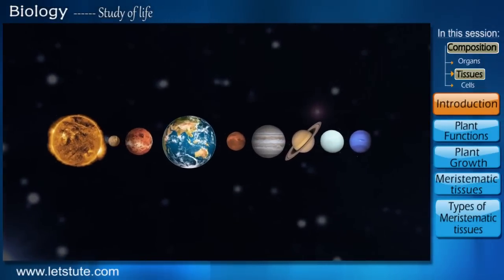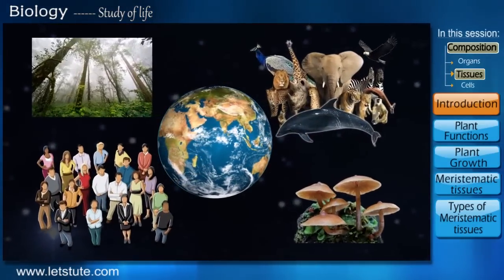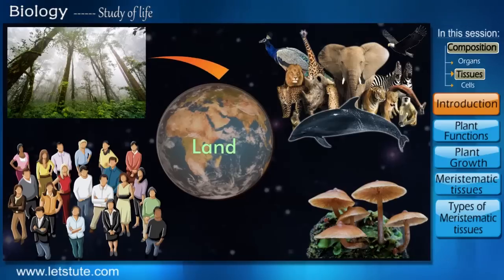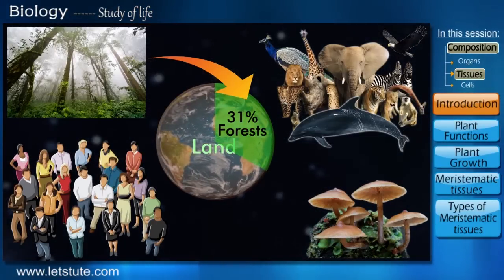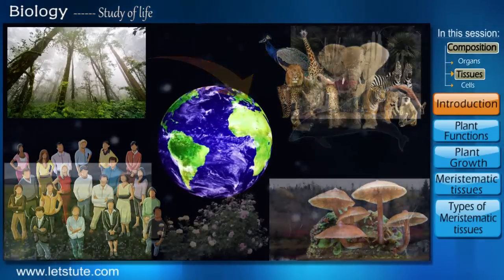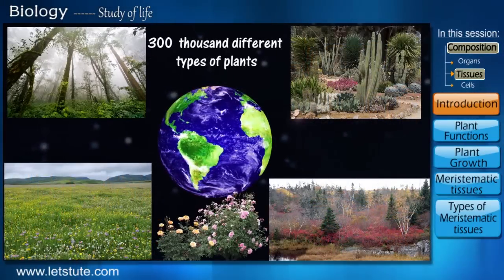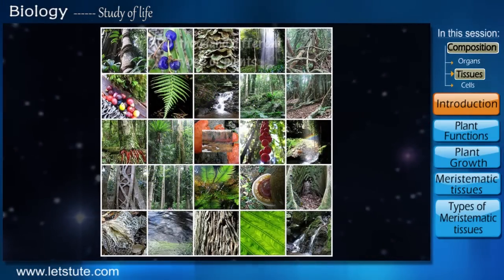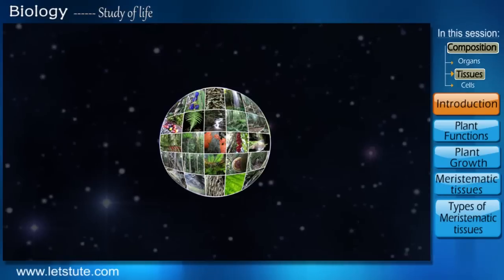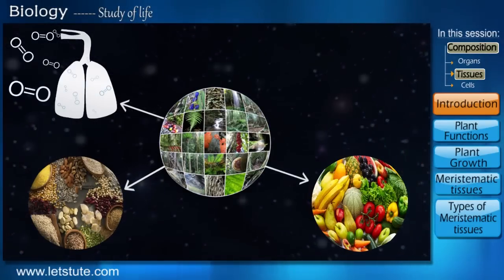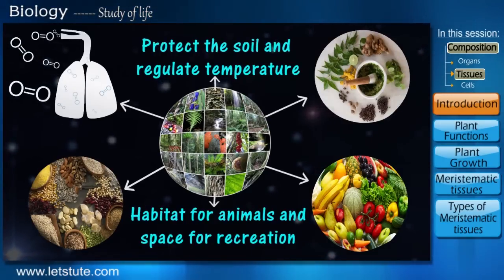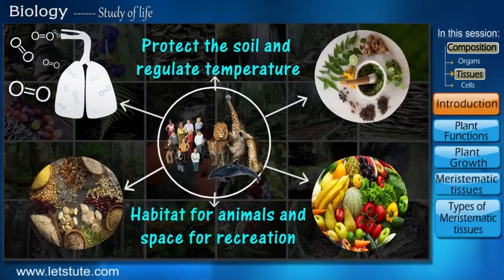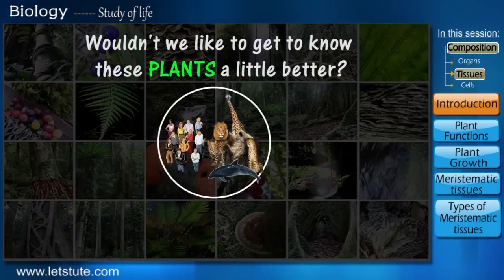As we all know, our planet Earth is home to diverse forms of life, of which forests cover 31% of the world's land surface and thus contribute to its significant green colour. These forests include 300,000 different types of plants that vary in shape and size. These plants provide us oxygen for breathing, food grains, fruits and vegetables, and are the source of most of our medicines and drugs, among many others.